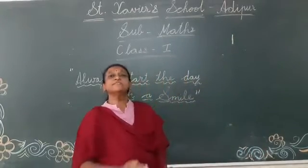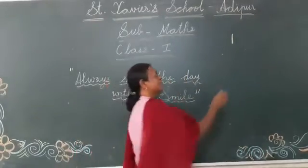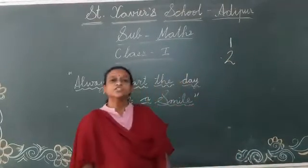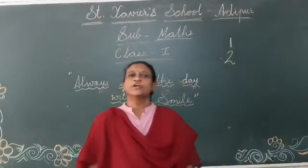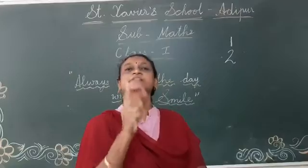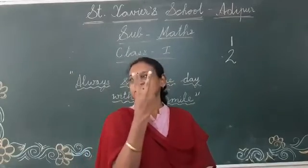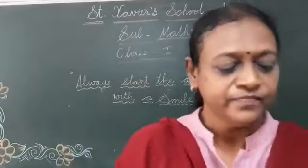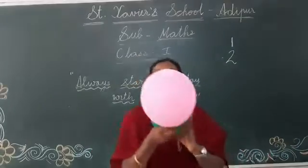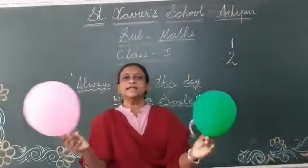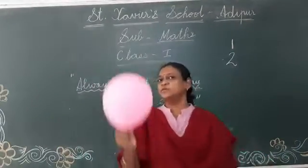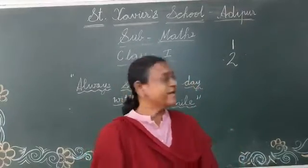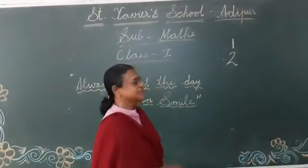Now, which number comes next? The next number is 2. Which number is this? 2. 1, 2. So, how many fingers? 2. I will show you. How many balloons can you see? 1 and 2 — a green balloon and a pink balloon. So, 2 balloons. And how will you write 2? Like this.